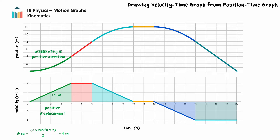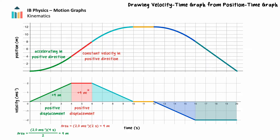In the next 2 seconds of motion, the object moves with constant positive velocity. From the position-time graph, we can see the object's displacement in this segment is positive 4 meters, from 4 meters to 8 meters. On the velocity-time graph, the area bounded by the graph is above the time axis because the displacement is positive. The area of this rectangle is 4 meters, the same as the displacement from the position-time graph.